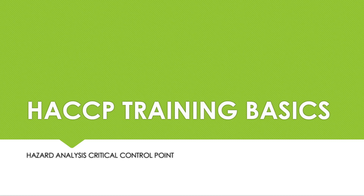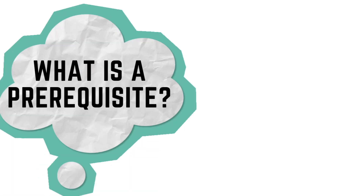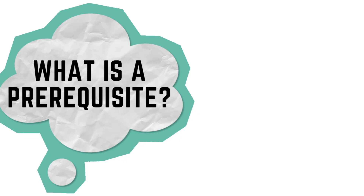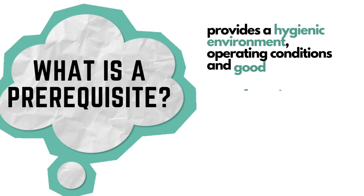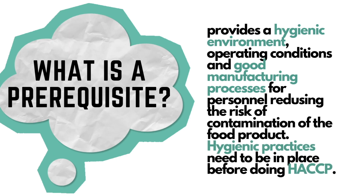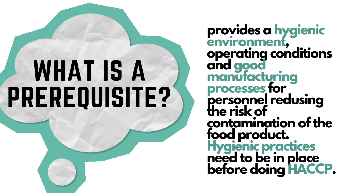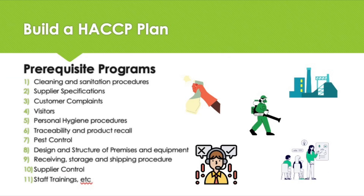Welcome to our HACCP principles training. What does this terminology mean? The prerequisite programs are programs that are put in place in the company to control hazards in the environment and prevent contamination of the product. These are the aspects you need for your factory to work. Prerequisite programs provide a hygienic environment, operating conditions, and good manufacturing processes for personnel that reduce the risk of contamination of the food product.